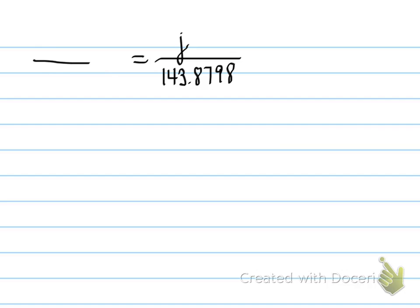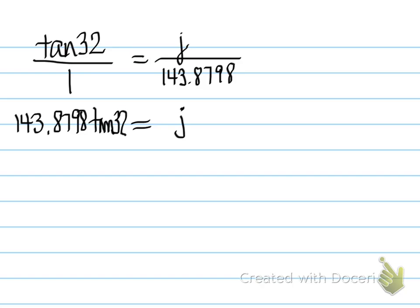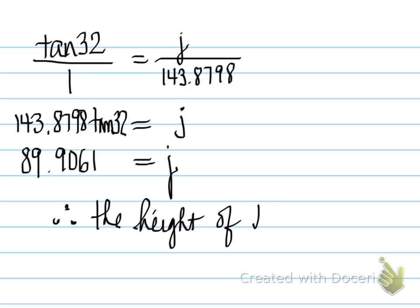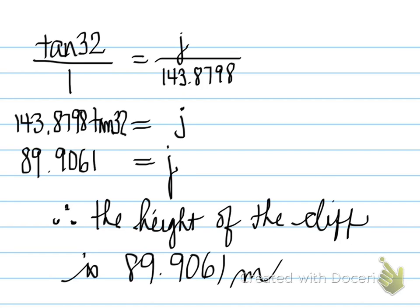Find the value of J, and we set up the tan 32 over 1 so that we can cross-multiply. I set this up this way, so it's guaranteed that regardless of where the variable is, you're able to solve for the letter J. Turns out J is equal to 89.9061. 89.9061 meters. Therefore, the height of the cliff is 89.9061 meters.